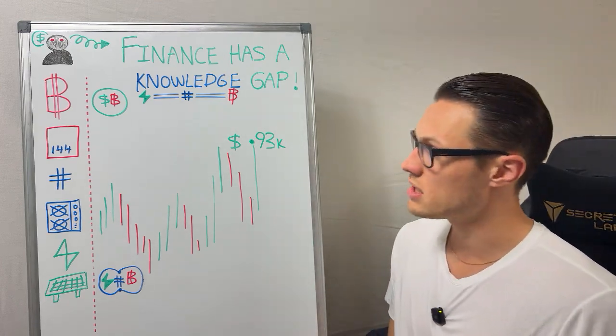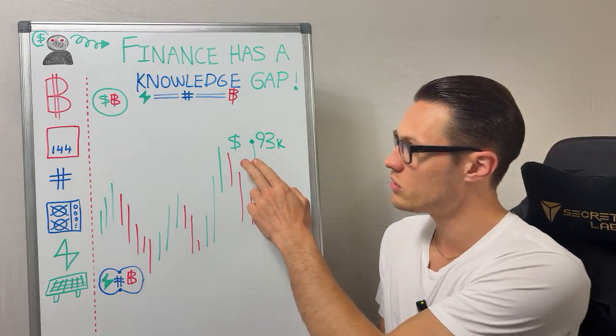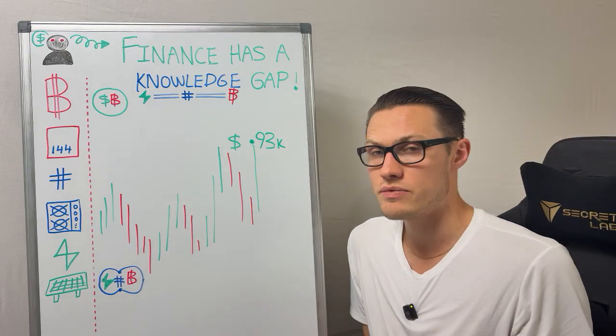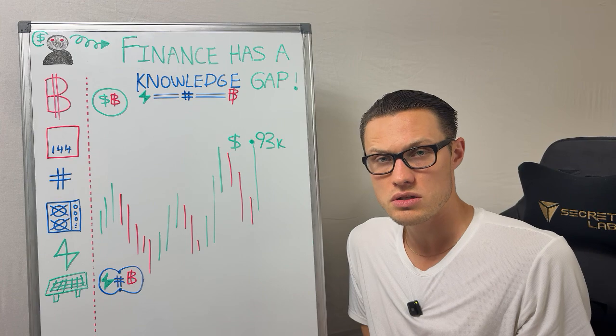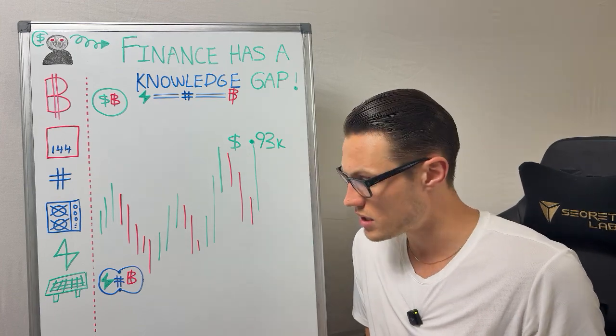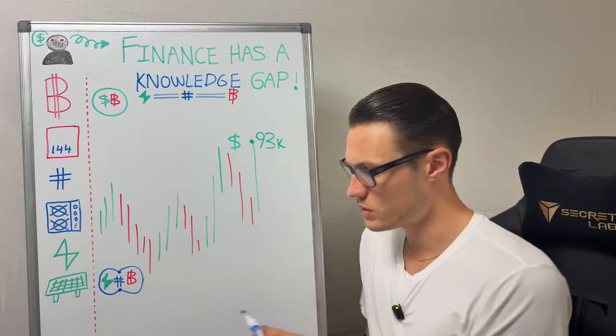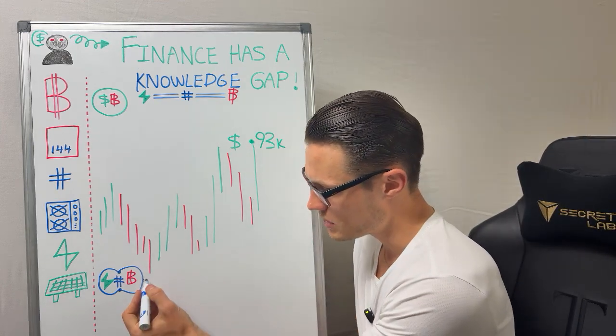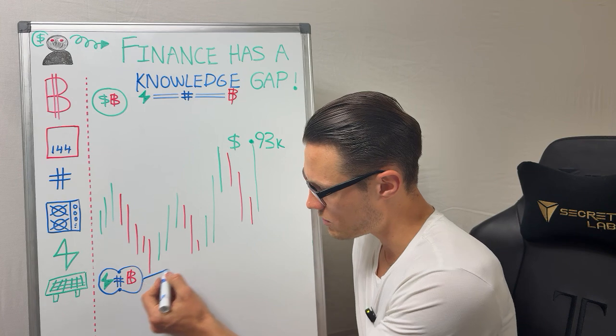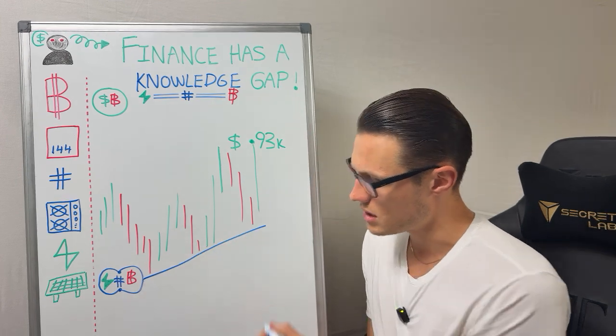That is to say that we can look at Bitcoin in the context of a quantity of dollars — the Bitcoin to dollar exchange rate — but also the original exchange rate: its exchange rate with electricity.